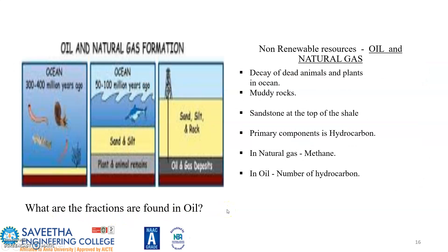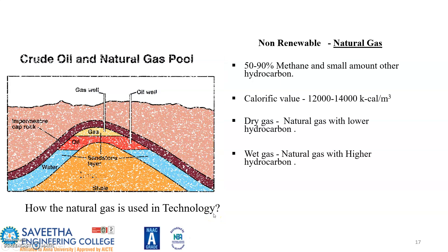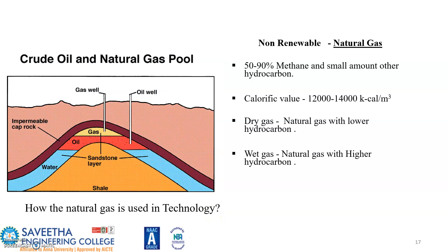A question is posed: which type of coal has the highest carbon content? The next non-renewable resource is oil and natural gas, formed from the decay of dead animals and plants in ocean muddy rocks and sandstone. The primary compound in natural gas is methane, and oil contains a number of hydrocarbons. A question asks: what are the fractions of crude oil? Natural gas contains 50 to 90 percent methane and small amounts of other hydrocarbons, with a calorific value of 12,000 to 14,000 kilocalories per meter cube. Dry gas is natural gas with lower hydrocarbons; wet gas contains higher hydrocarbons.